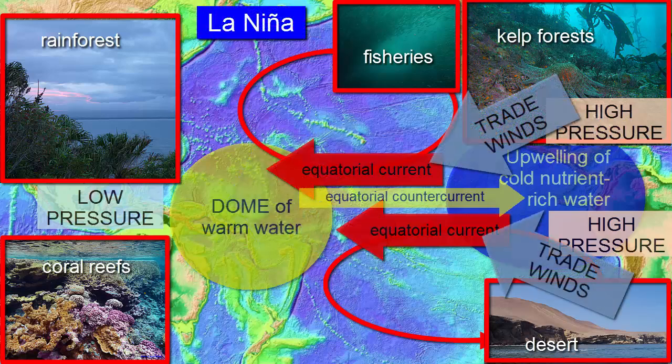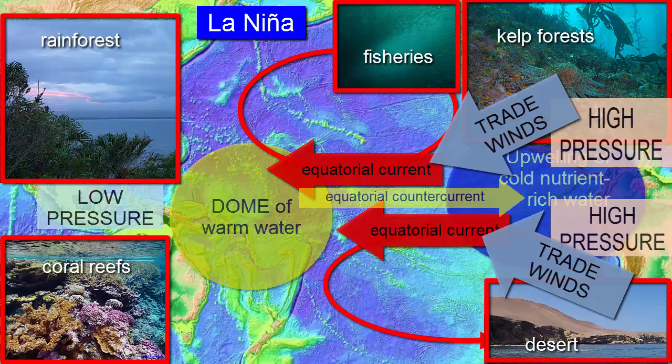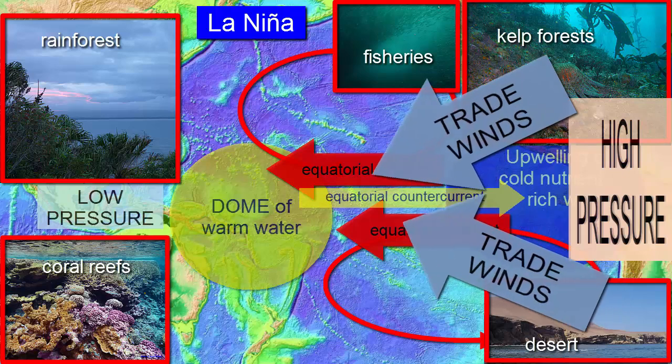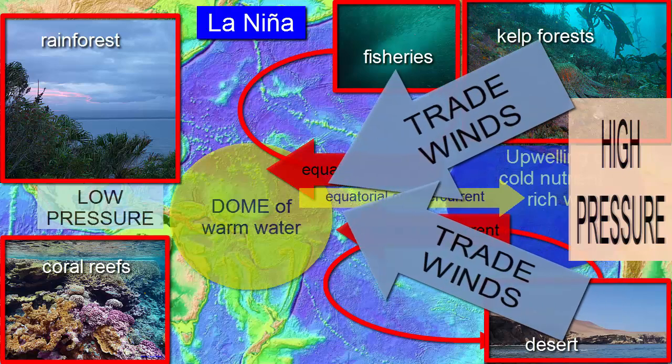One end member of the oscillation happens when the pressure systems that produce the trade winds increase, the strength of the winds increase, and the rains are greater in the west, and the land is drier in the east, and the upwelling is even more intense, and we call that a La Niña.